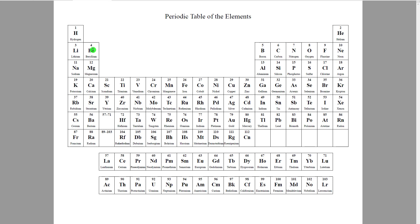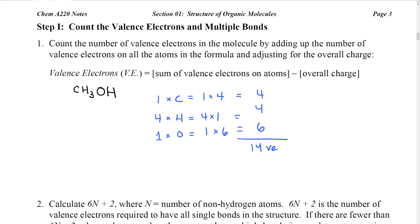Beryllium has two valence electrons in column two of the main group, boron has three, and so forth. To find the valence electrons, locate the element on the periodic table, move to the far left of the row, and count across. Carbon, for example, has four valence electrons. So for our formula: carbon contributes 1×4, hydrogen contributes 4×1, and oxygen contributes 1×6 — totaling 14 valence electrons.